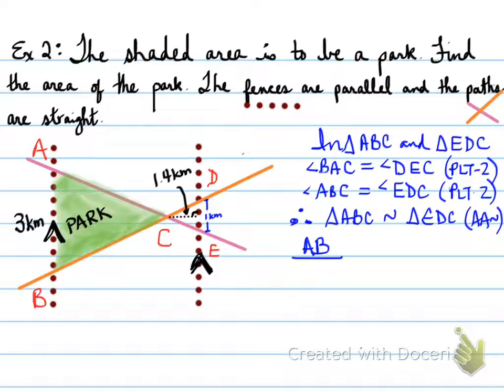Because of angle-angle similarity, we can now prove sides are proportional. So AB matches with ED. And that's 3 over 1, which is equal to 3. That, folks, is our scale factor. So our scale factor is 3.